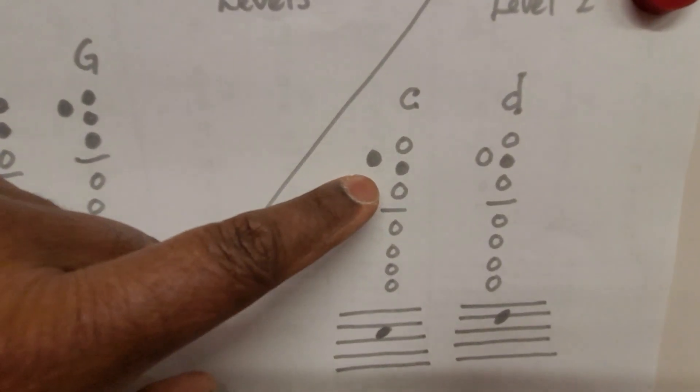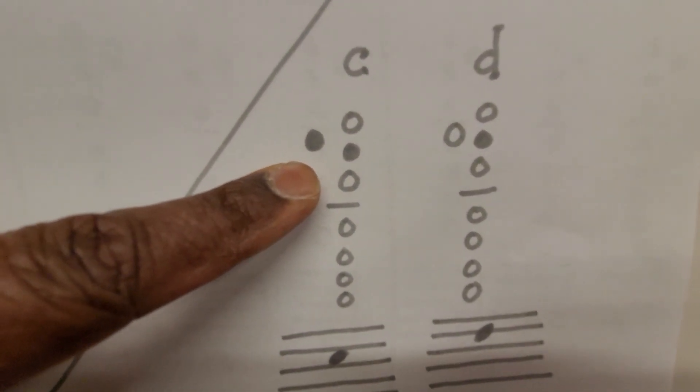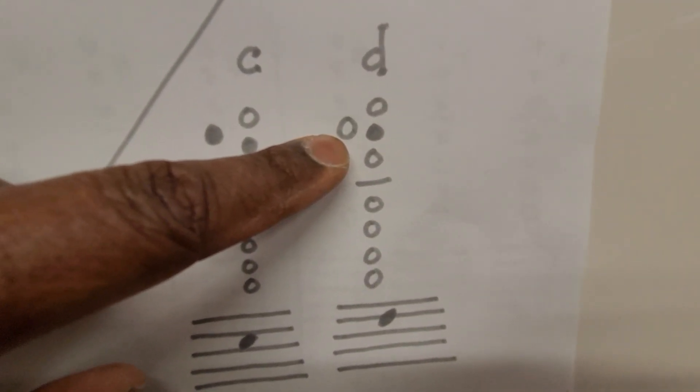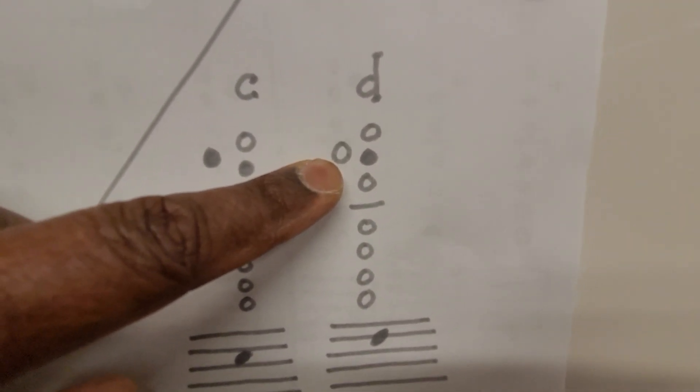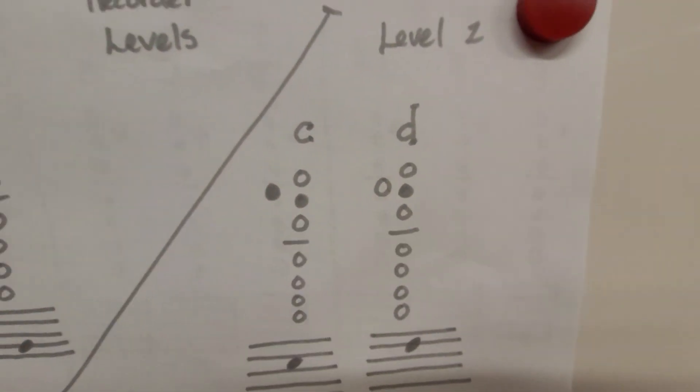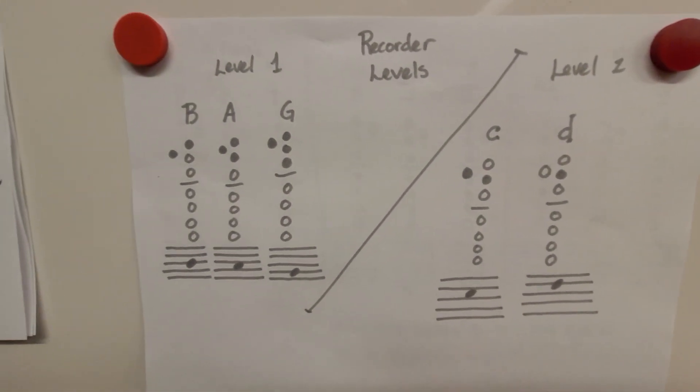And we have our High C, which is super easy. Why? Because it's second finger and thumb. And we have here the easiest note on recorder is High D, which is no thumb at all and second finger. So these are the five notes we need to know.